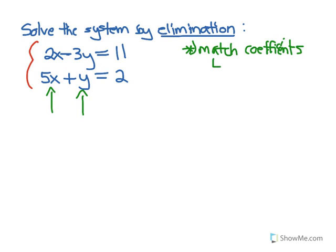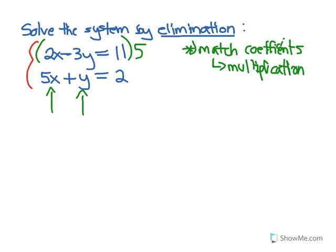So what we can use is multiplication. We can multiply an entire equation by a certain constant, and as long as you do it to both sides of the equal sign, you're not changing the balance of the equation. So we could multiply the whole first equation by 5 if we wanted to — multiply each part by 5, including the 11, so that you're multiplying both sides of the equal sign by 5. That's perfectly allowed.